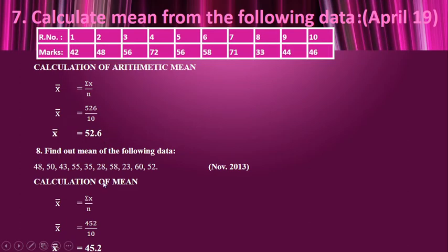In this situation, the total of the values given is 452, divided by the number of values which is 10. So x̄ is 45.2.